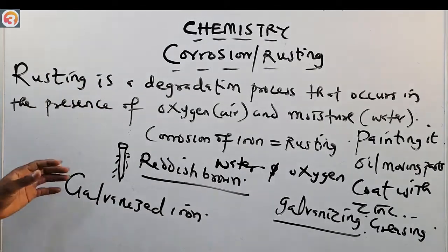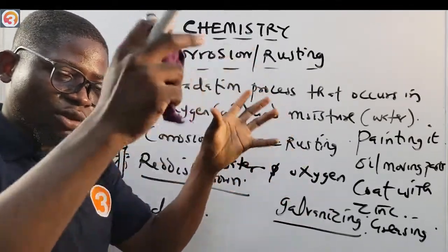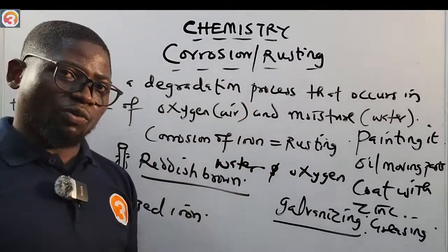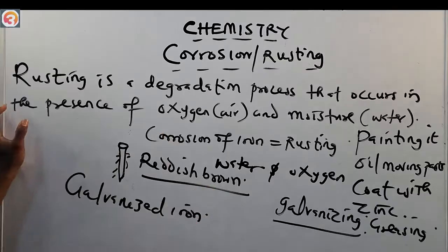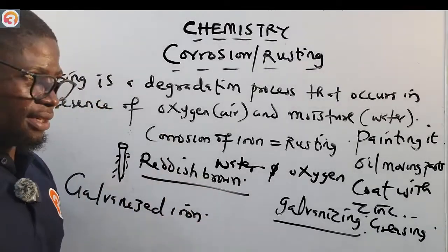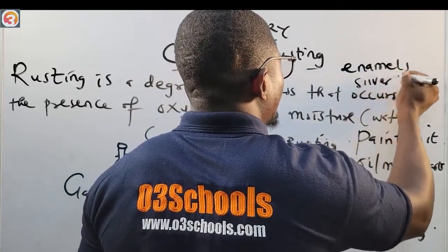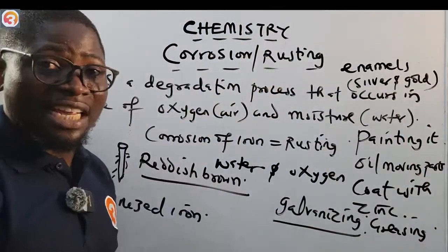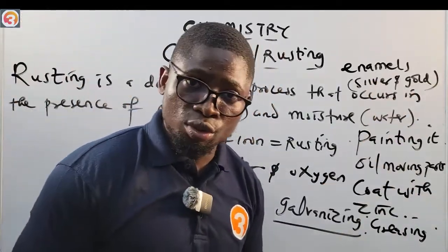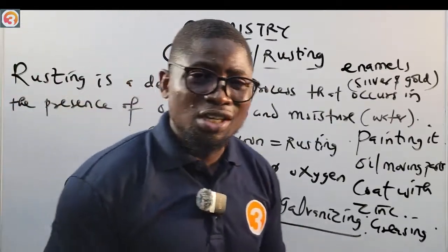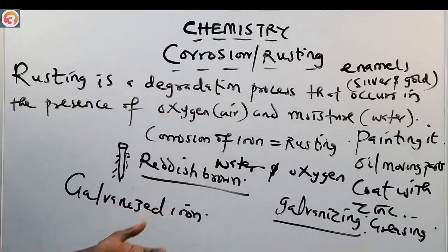We can also coat iron with enamel or precious metals like silver and gold, but these are very, very expensive — imagine buying enough gold to coat a bicycle. So galvanization with zinc is the most practical option. These are the main ways of preventing rusting: painting, greasing, oiling moving parts, and coating with zinc.